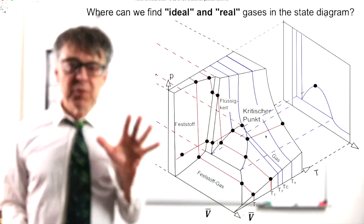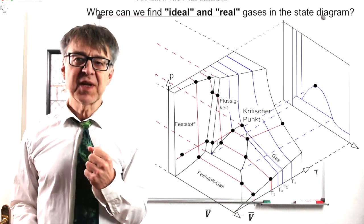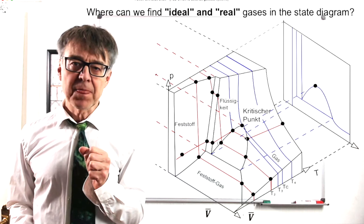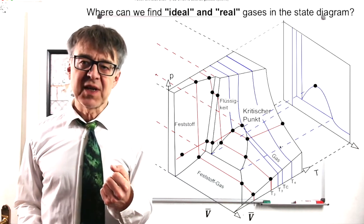If we move on the PVT surface to real gases, that is, gases closer to the critical point, we have deviations from the ideal behavior. Below the critical point, real gases can also be liquefied.